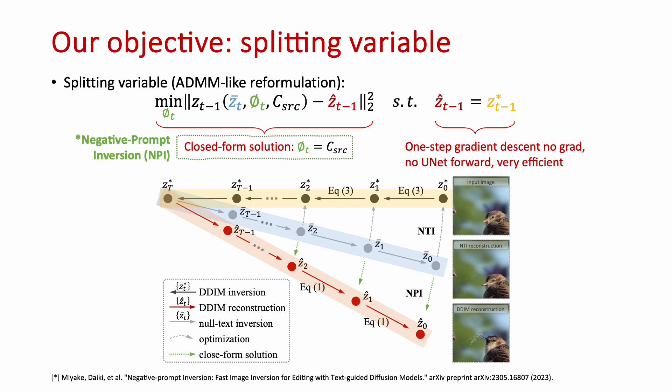In our formulation, we split the Z star variable by introducing the DDIM reconstruction path shown in red with hat. So we want to align the blue path with the red path instead of the yellow one, as in the case of null-text inversion. And we put it as a constraint that the red should be equal to the yellow.